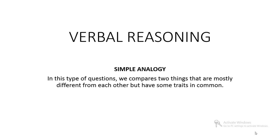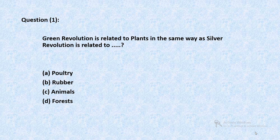Verbal reasoning. In this type of questions, we compare two things that are mostly different from each other but have some traits in common. Question 1: Green Revolution is related to plants in the same way as Silver Revolution is related to — poultry, animals, or forest?